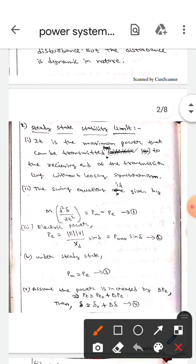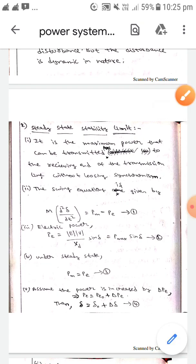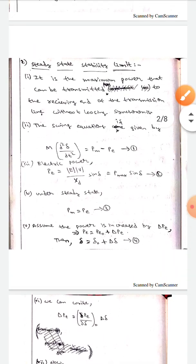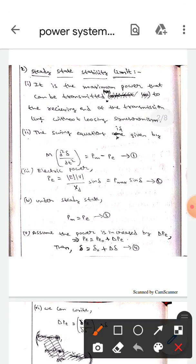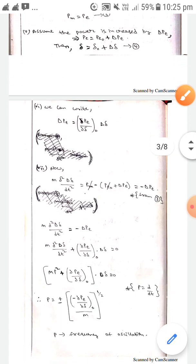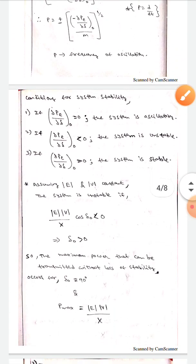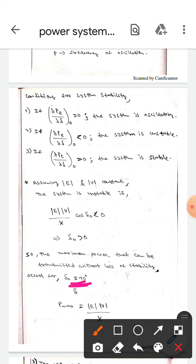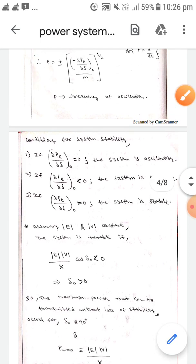This is all about the steady-state stability limit. I hope you understand, guys. According to the definition, the maximum power that can be transmitted to the receiving end of the transmission line without losing synchronism—this is the steady-state stability limit. I hope you understand. Thank you.